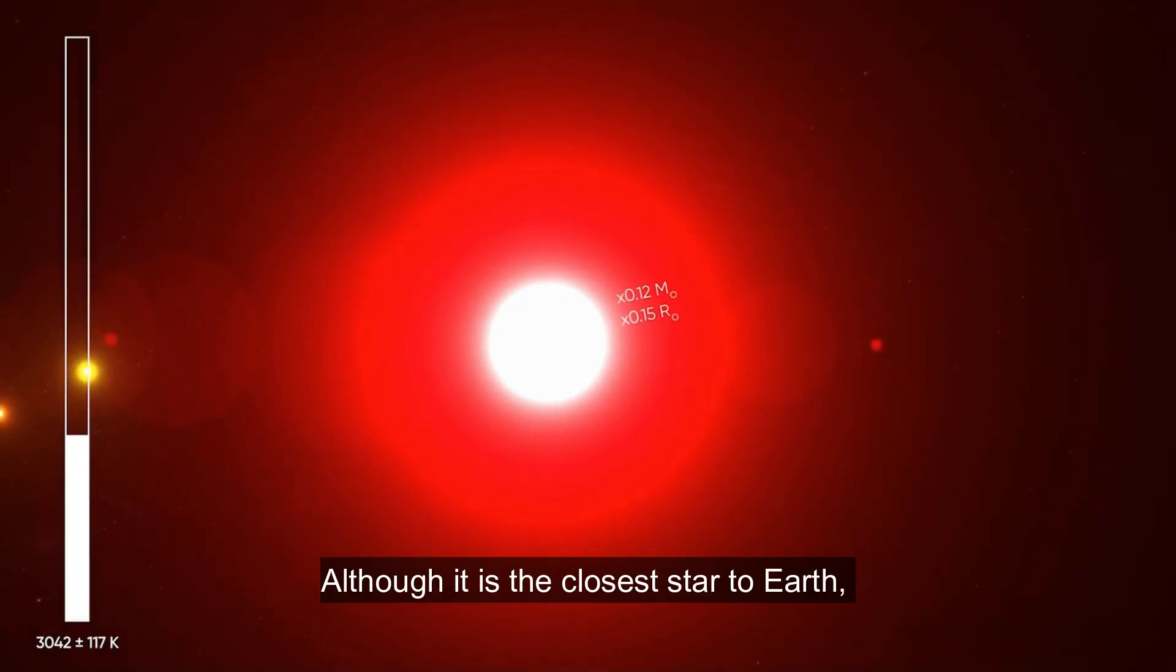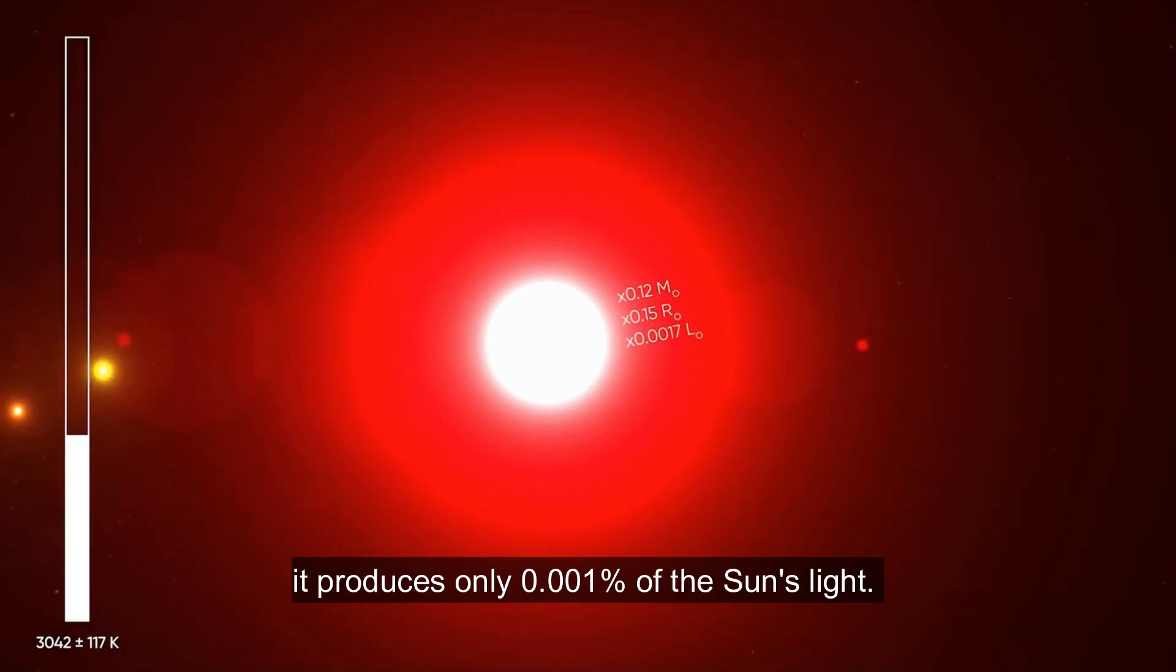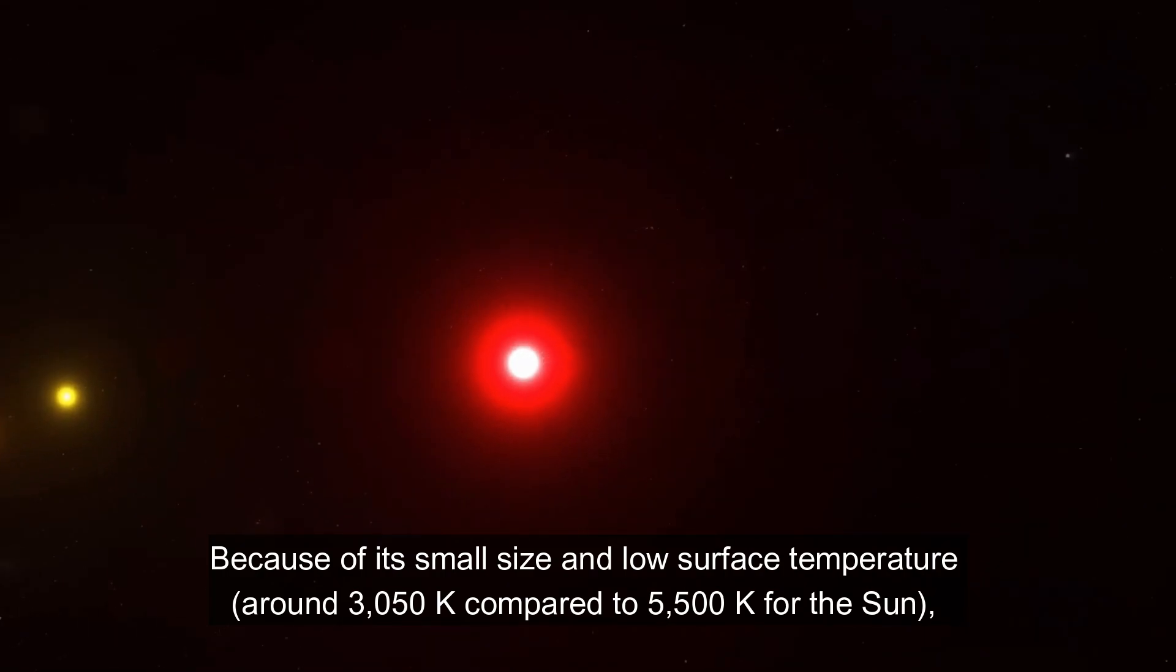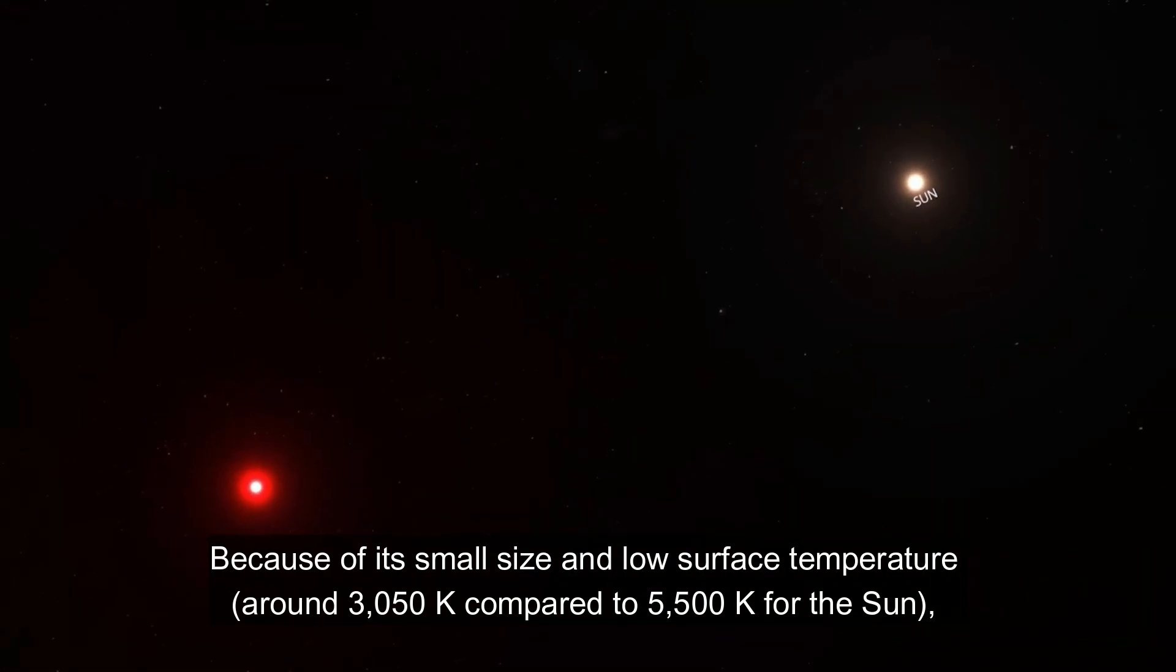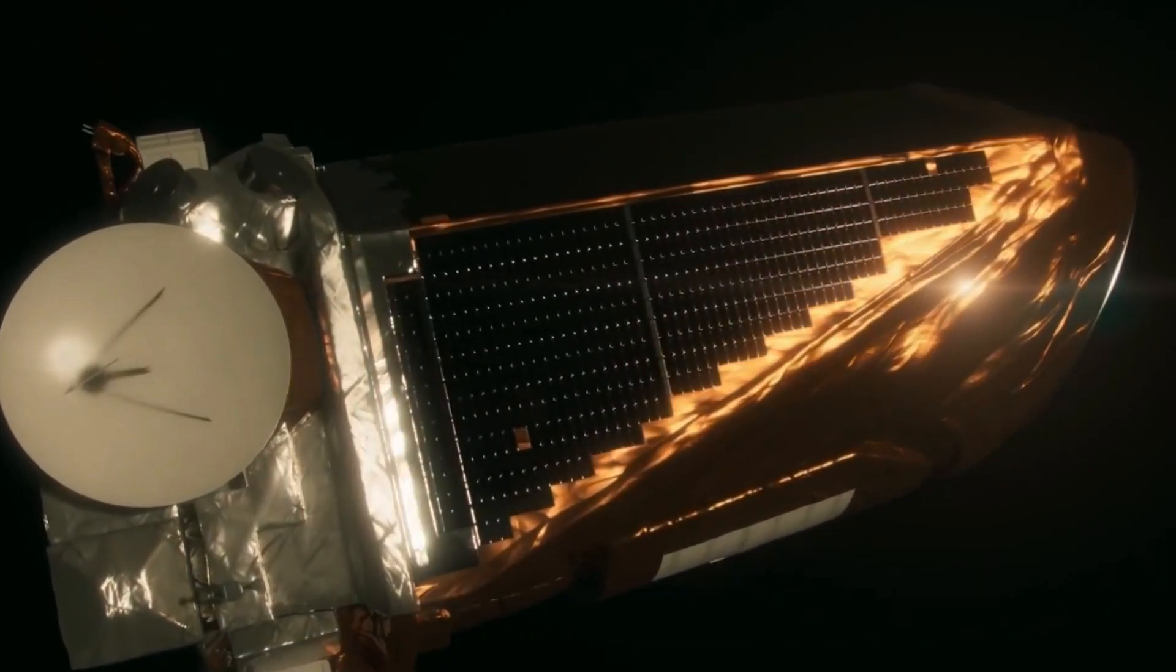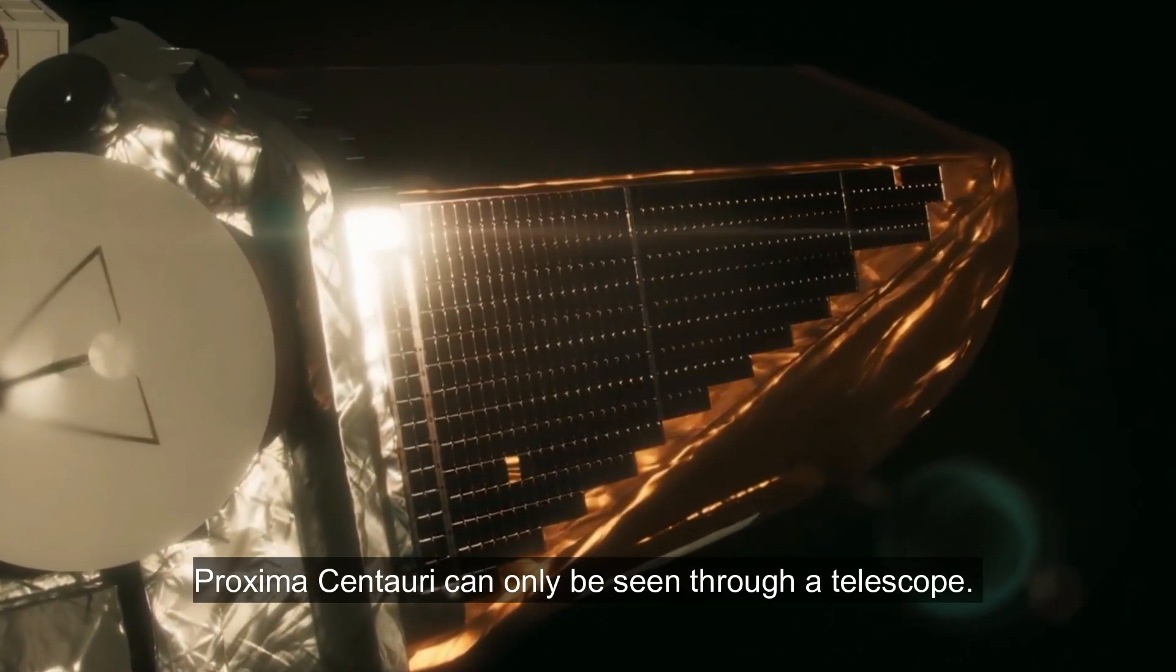Although it is the closest star to Earth, it produces only 0.17% of the Sun's light. Because of its small size and low surface temperature around 3,050 K compared to 5,500 K for the Sun, Proxima Centauri can only be seen through a telescope.